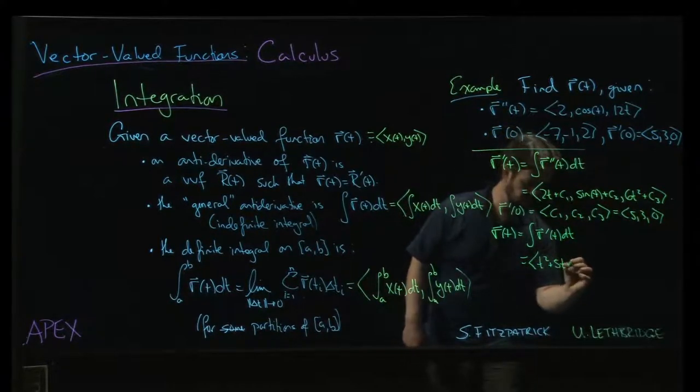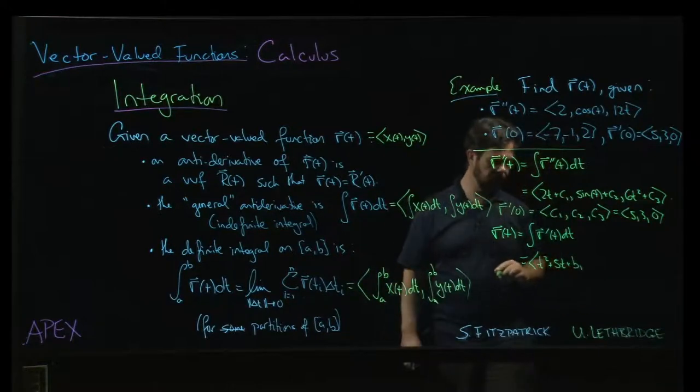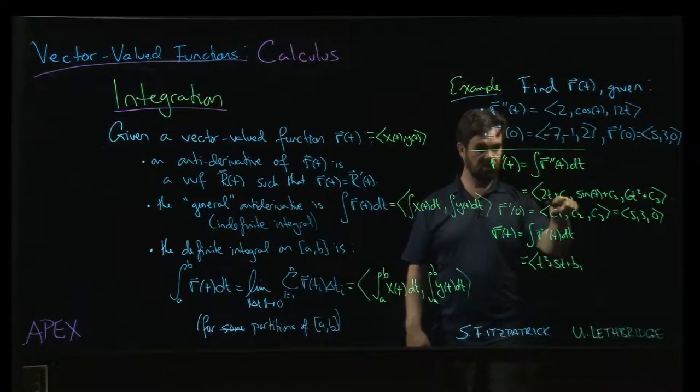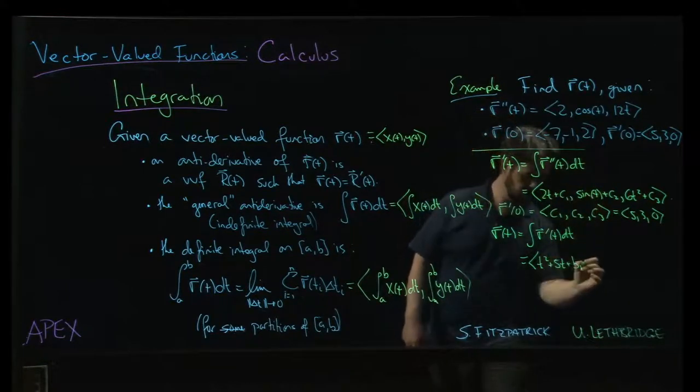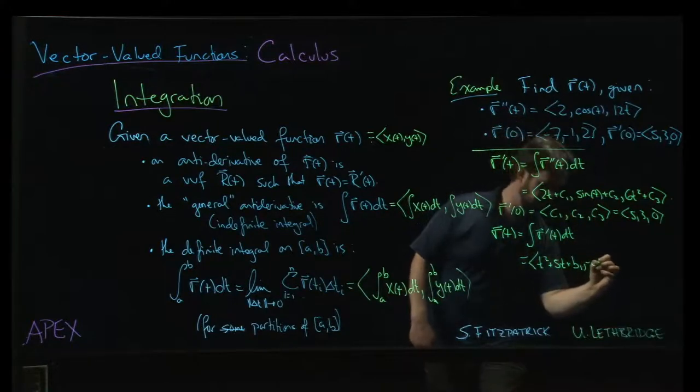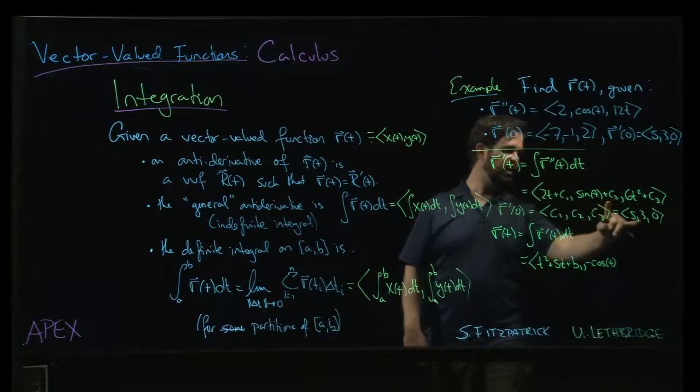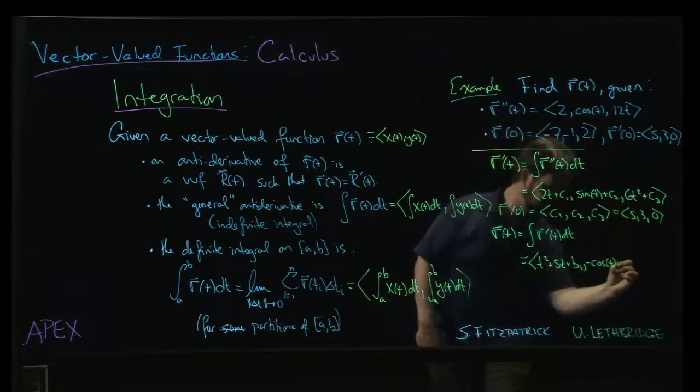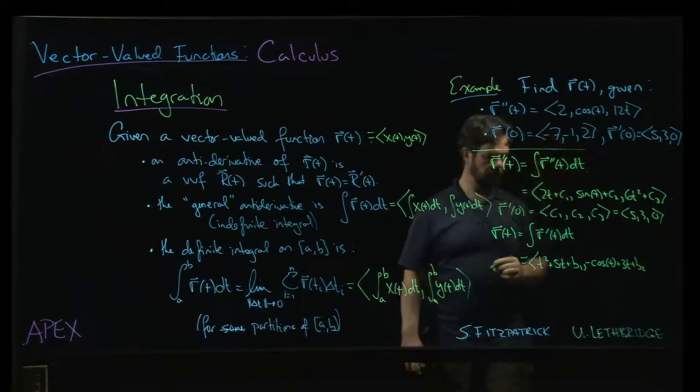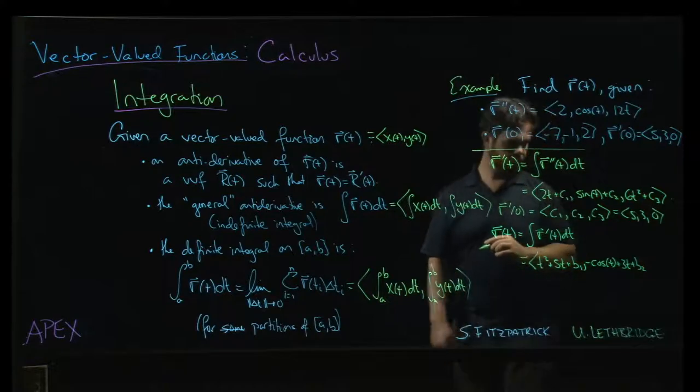And we're going to get a new constant, let's call it b1 this time. Okay? So t squared coming from here, the 5t comes from here because c1 is 5, plus we get a constant of integration. Now, sine t integrates to negative cosine t. C2 is actually 3. So antiderivative of 3 will be 3t. And we might get another constant, b2.